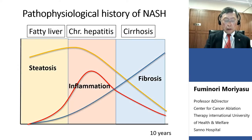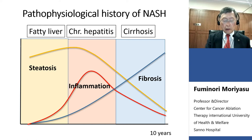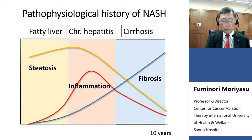This slide indicates the pathophysiological changes seen in the NASH liver. Steatosis is mainly seen in NAFLD at the beginning of NASH. After a second hit, inflammation destroys hepatocytes and liver parenchyma, with chronic hepatitis being dominant. Finally, fibrosis becomes severe and dominant in advanced NASH.